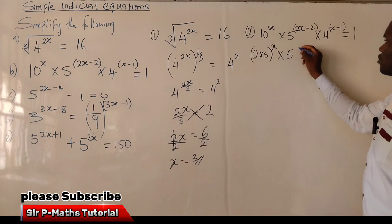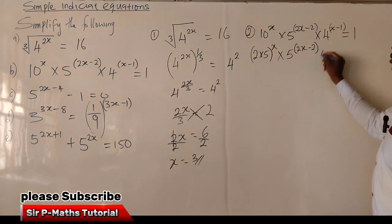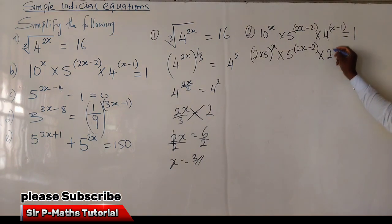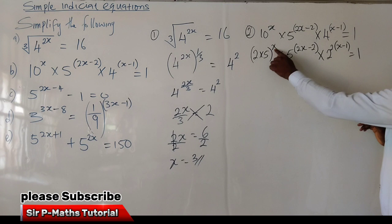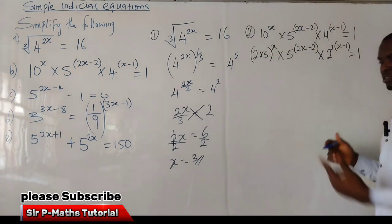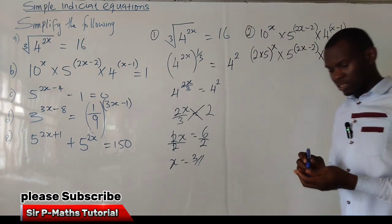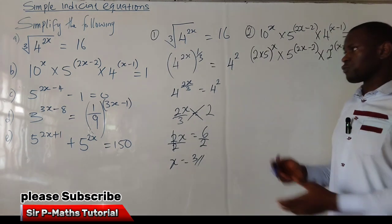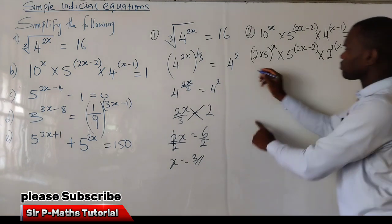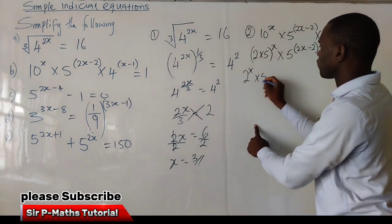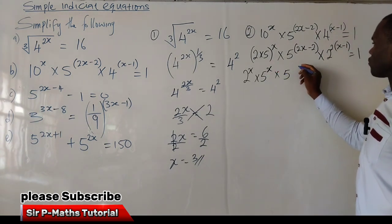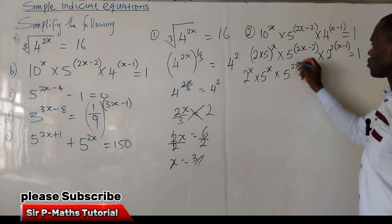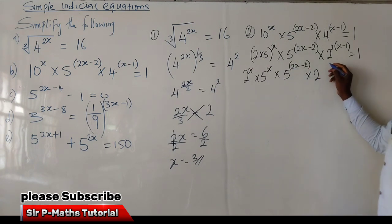Bring down 5 raised to power 2x minus 2. Over here, 4 can be reduced to 2 raised to power 2. Bring down the original power, equal to 1. We can use the outer power to multiply the powers of 2 and 5 — a particular law of indices allows this. Expanding gives us 2 raised to the power of x, times 5 raised to the power of x, times 5 raised to power 2x minus 2, times 2 raised to the power of...